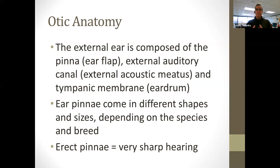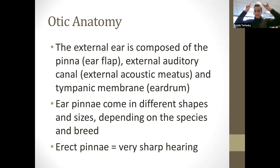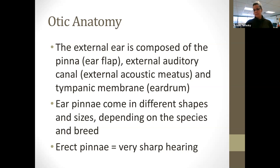So we'll break that down, go through the thing, and at the very end I'll give you what's in the external, middle, and inner as a cheat sheet. Pinna — you'll hear it pinna or pinna, just depends on who says it — that's just your ear flap. Within that external ear is what they call your external auditory canal or external acoustic meatus, which is part of your external. Then your tympanic membrane, which is just a fancy name for your eardrum. The pinna comes in different shapes depending on the species and breed.